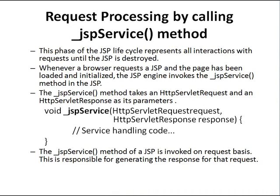Stage 6 is request processing by calling the JSP service method. This phase of the JSP lifecycle represents all interactions with requests until the JSP is destroyed. Whenever a browser requests a JSP and the page has been loaded and initialized, the JSP engine invokes the JSP service method. The JSP service method takes an HTTP request and an HTTP response as its parameters, and is invoked on a per-request basis, responsible for generating responses.